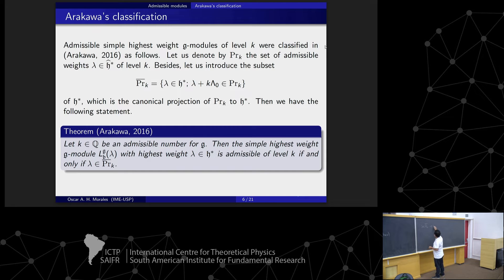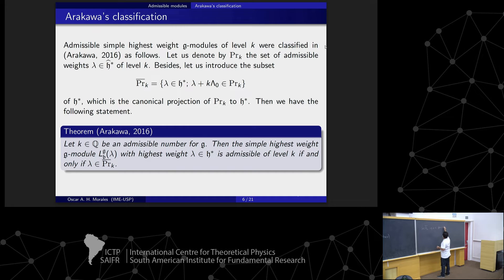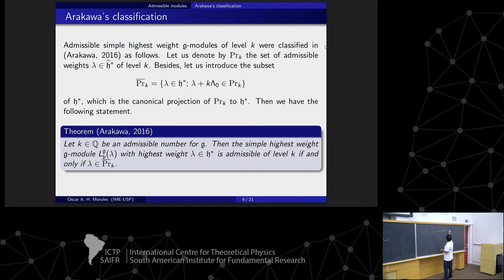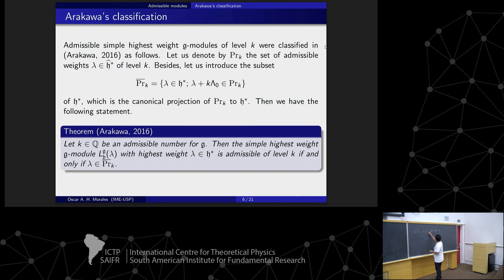Now we have this description of the problem. Let k be an admissible number. Then the simple highest weight g-module L(lambda) with highest weight lambda is admissible of level k if and only if lambda is in this set. But remember: lambda being in this set means lambda is regular dominant.